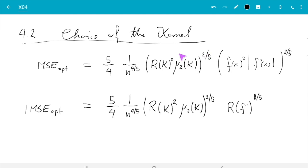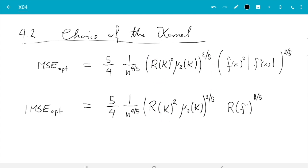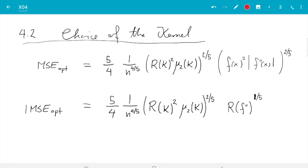Then here, it's the same for both terms, is the contribution which comes from the choice of kernel. And finally, here is a contribution which comes from the unknown density function f. And in this section, we will look at what do we get from the choice of kernel.